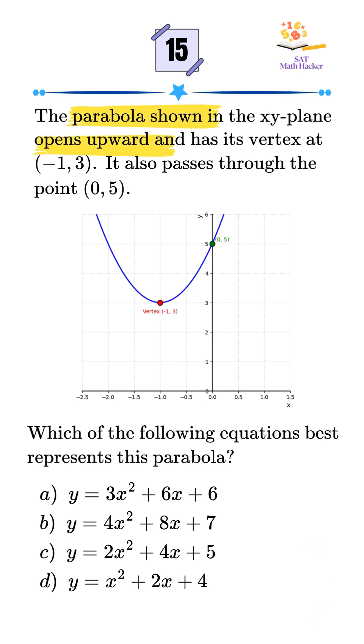We're given a parabola that opens upward with its vertex at negative 1 comma 3, and it also passes through the point 0 comma 5. We're asked which equation best represents it.